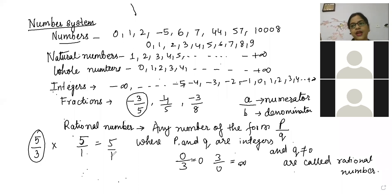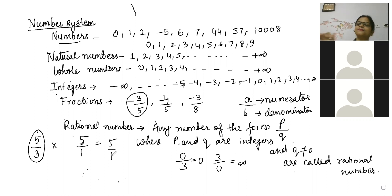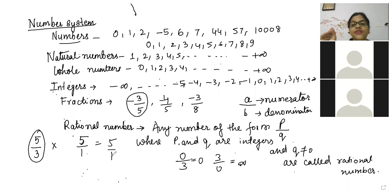Let us do a quick session. I will say a number, you just have to type fraction or integer. Two by three — fraction. Four — integer. I hope my children understood the difference between a fraction and an integer. Rational numbers are fractions only — containing numerator and denominator.